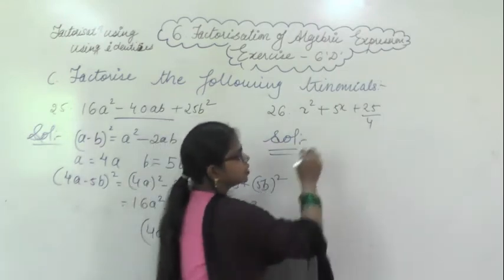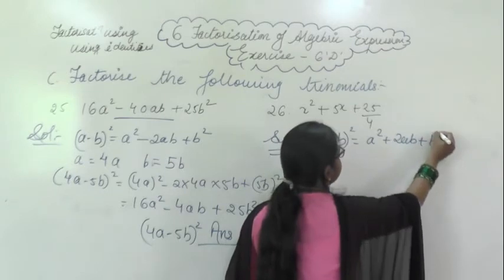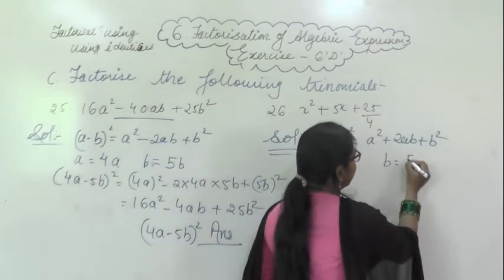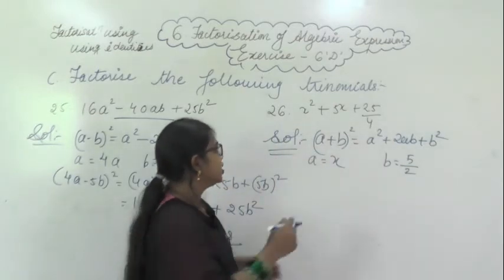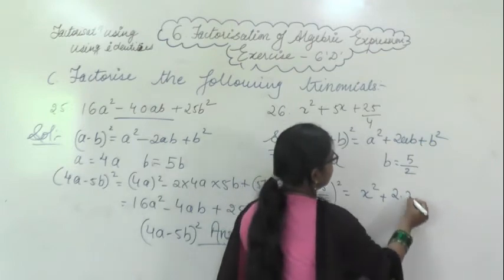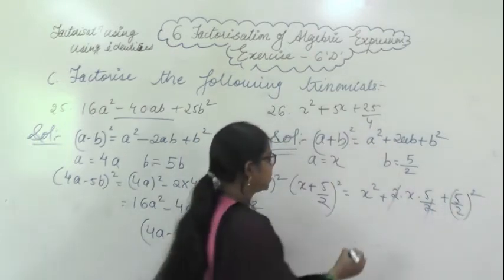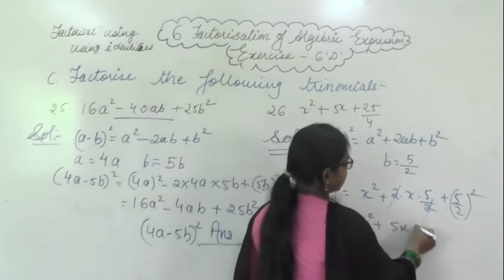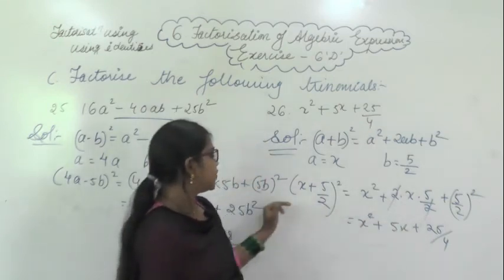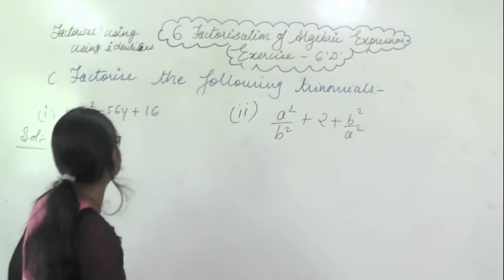Question 26: both terms are positive, so the (a+b)² formula is used: a² + 2ab + b². Here a = x and b = 5/2, since √25 = 5 and √4 = 2. Substituting, (x + 5/2)² = x² + 2×x×(5/2) + (5/2)² = x² + 5x + 25/4. So the factorization is (x + 5/2)².